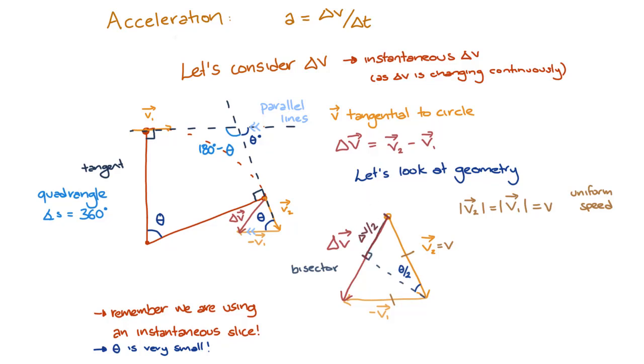So, if we consider our diagram, v is the hypotenuse, half of delta v is the opposite side, and the angle is half of theta. So we can write sin of theta on 2 is equal to delta v on 2 divided by v. We can actually simplify this expression down even further by using the small angle approximation. Remember that theta is really really tiny and infinitesimally small. The small angle approximation allows us to approximate sin of an angle as the angle itself.